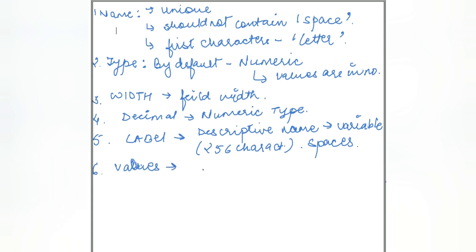The sixth is values. Under values, you have to assign certain descriptive value labels. Thus, numeric code represents the non-numeric categories. For example, zero denotes to male, one denotes to female.